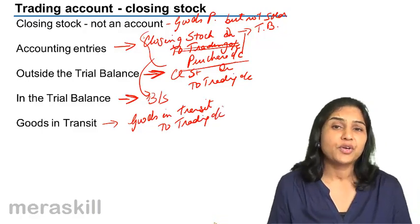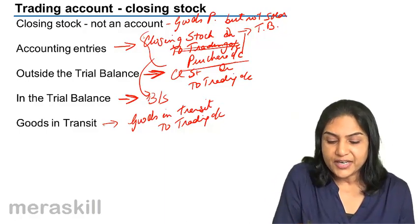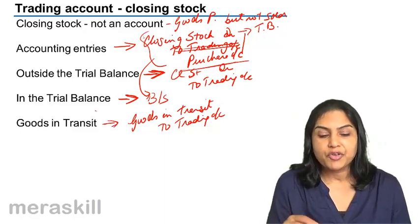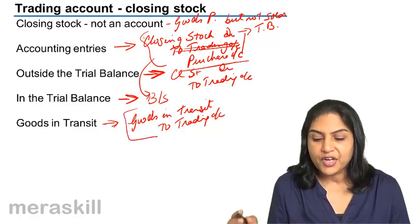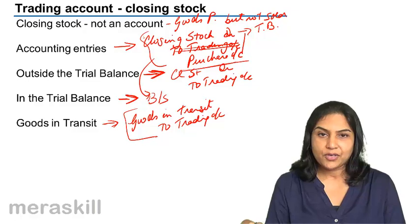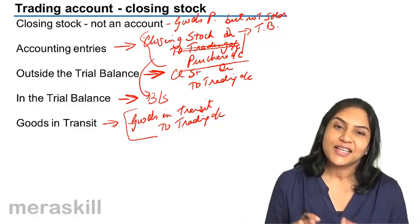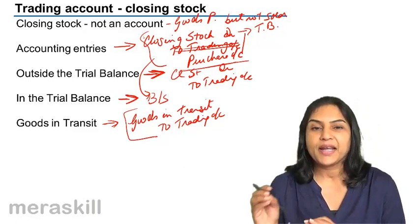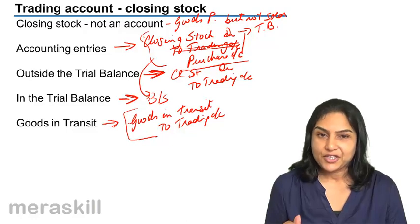We could also take it to the purchases account. Just like closing stock, if goods in transit are shown outside the trial balance, we pass the entry: Goods in Transit Account debit to Trading Account. However, if it is within the trial balance, it means the entry is already passed, and goods in transit would be taken only to the asset side of the balance sheet.